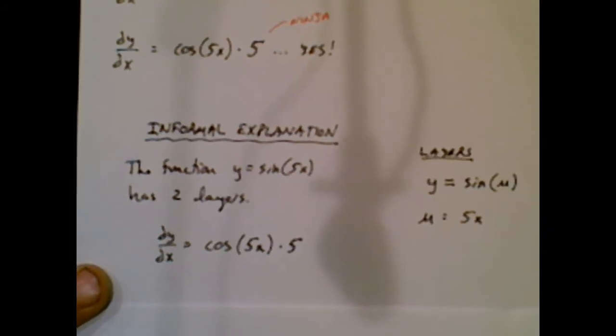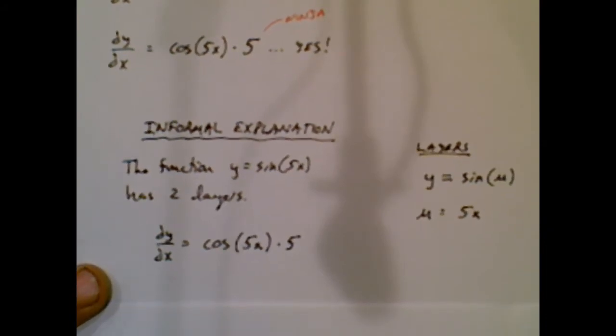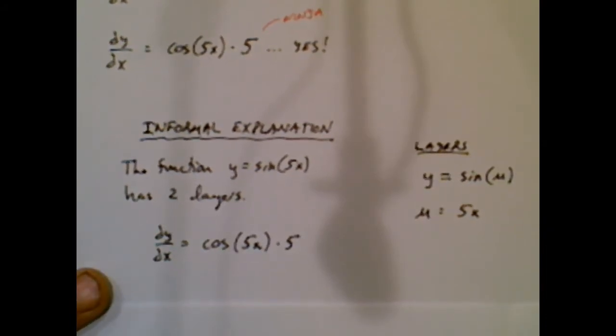Up until today, or this video, you've not seen layers on your calculus problems. So the derivative is the derivative of the first layer, which is a cosine, and the derivative of the second layer, which is a 5.